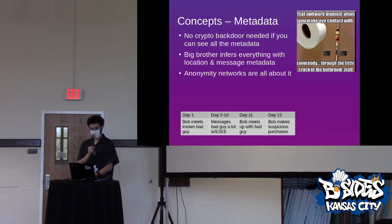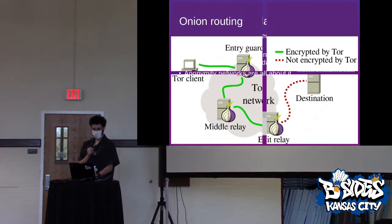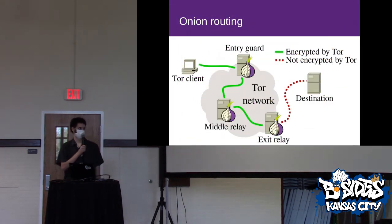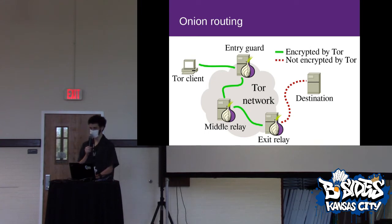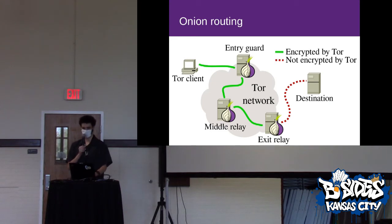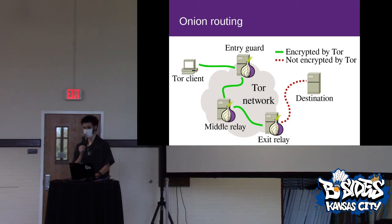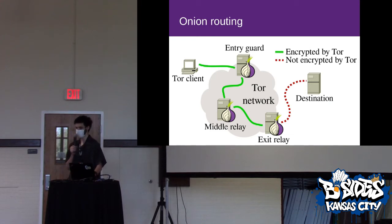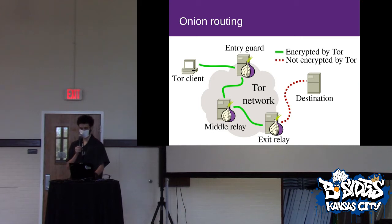A quick crash course on onion routing: it's by far the most popular method for anonymity networks. It's basically just a series of proxies, but with chained encryption — imagine if you chained a bunch of VPN services together. It just has more intelligent, somewhat random picking of nodes to use, but that's a really complicated topic beyond the scope of this talk.